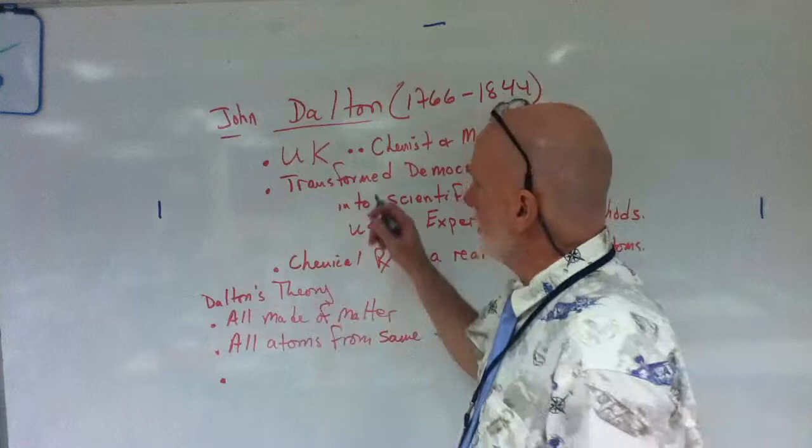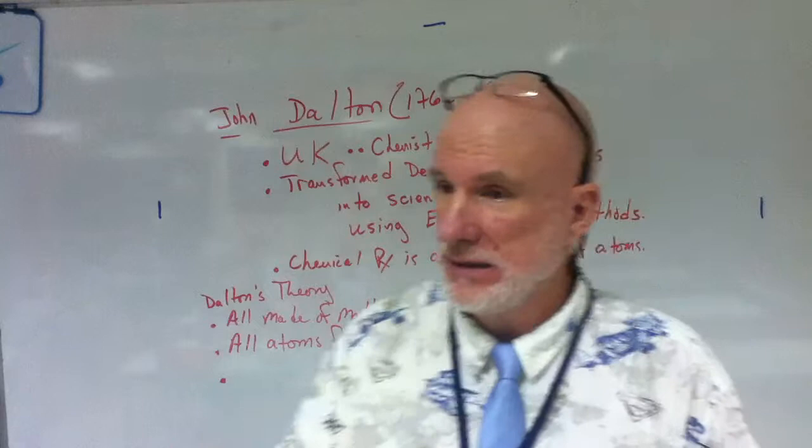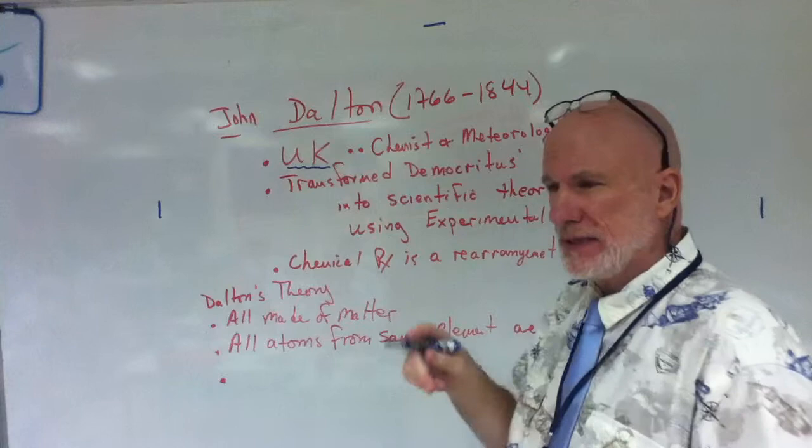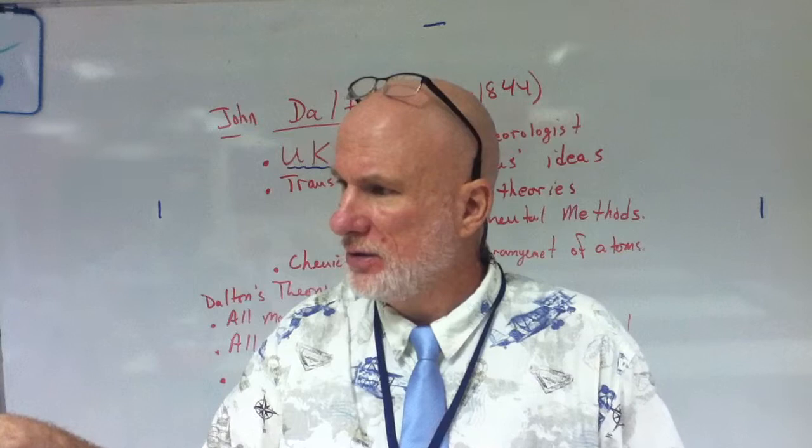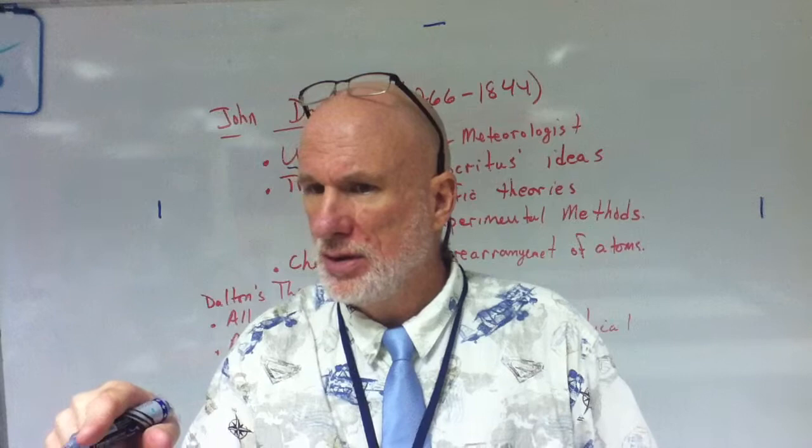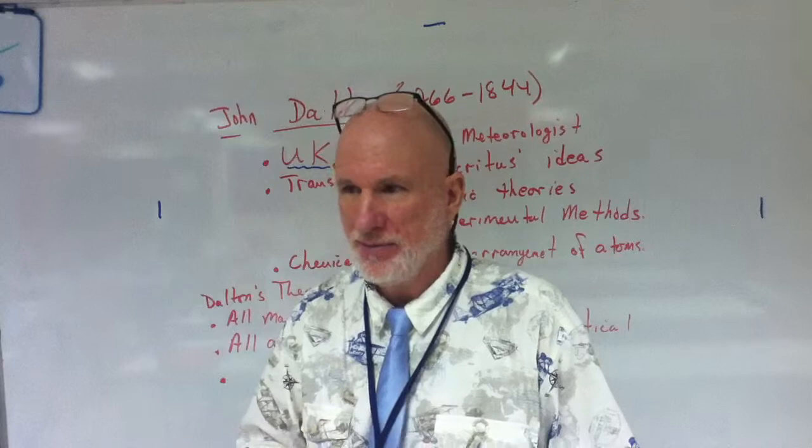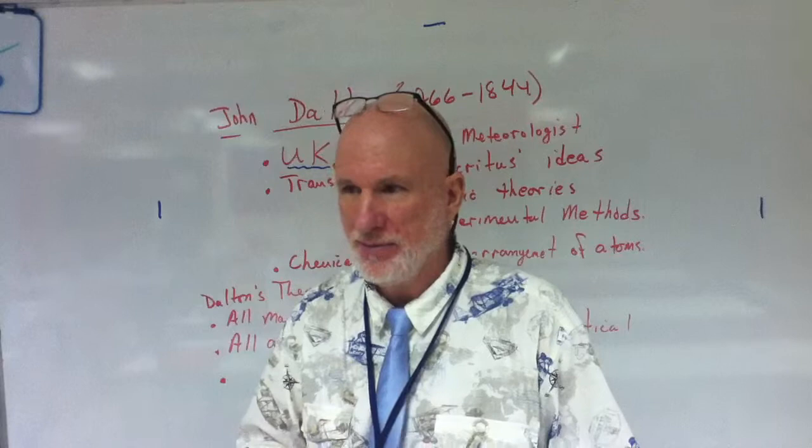But let's talk about John Dalton in 1766 to 1844. He was a chemist. He was from the UK. And he was a chemist and a meteorologist. Somebody said something about his meteorology. What I said was he kept daily records of the weather for 57 years. I'm 57 years old. I can't even imagine what he went through. He must have been an old man when he died.